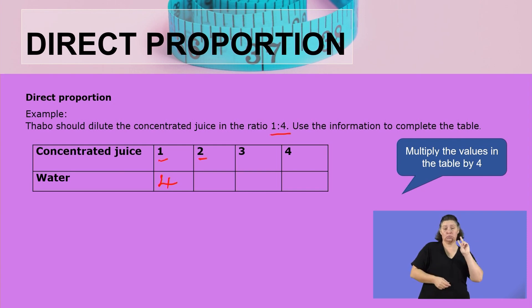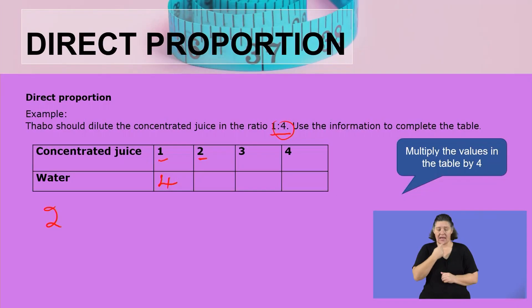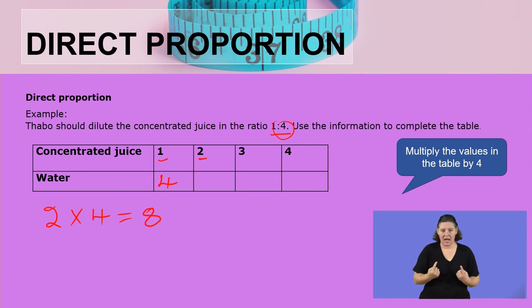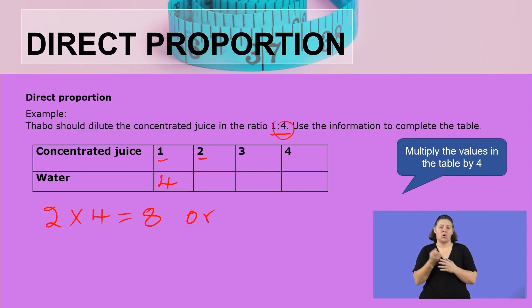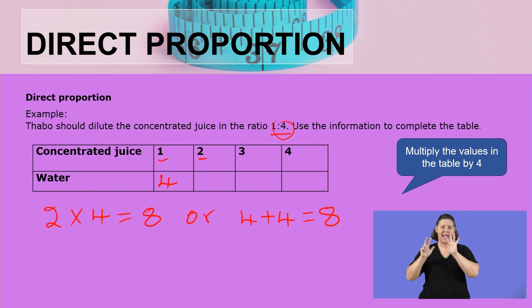What if we are having two glasses? To get the number of glasses of water, we take 2 and multiply it by 4, because for every extra one we need to add 4. So 2 multiplied by 4 equals 8. It's either you can multiply or you can add. Let us also use the method of addition: for one glass it's 4, so if we need for two glasses, we say 4 plus 4, which gives us 8 glasses.